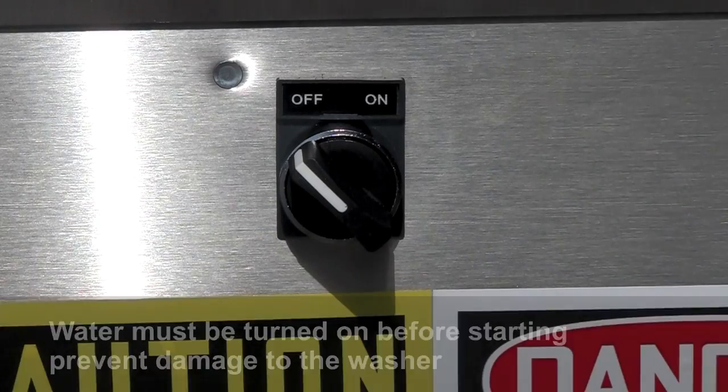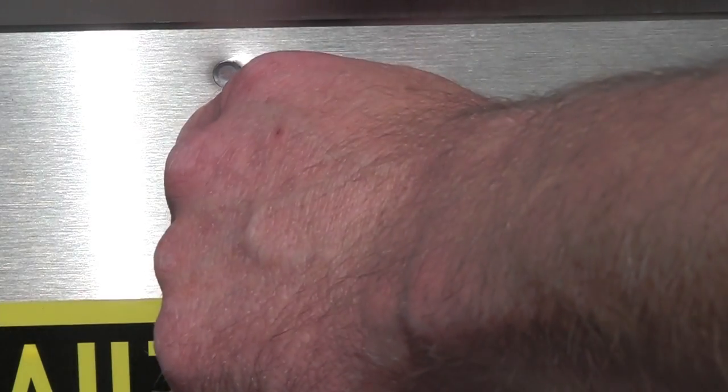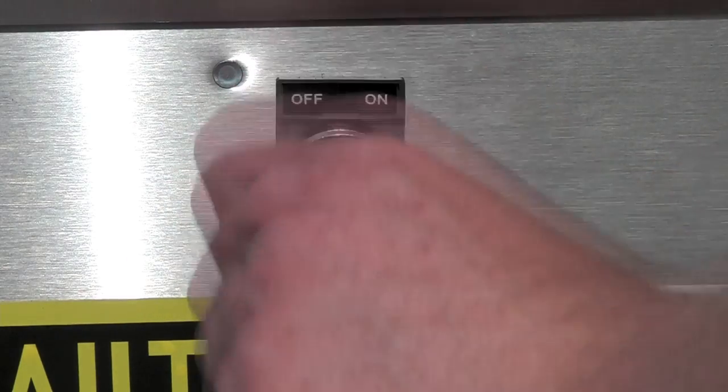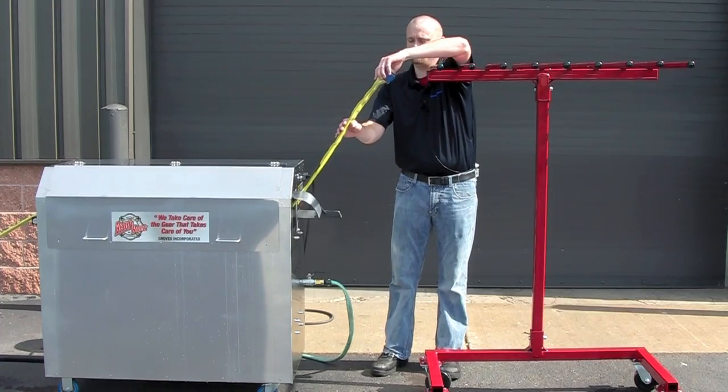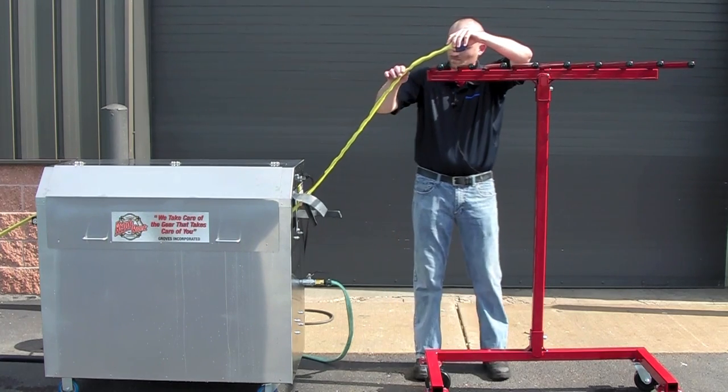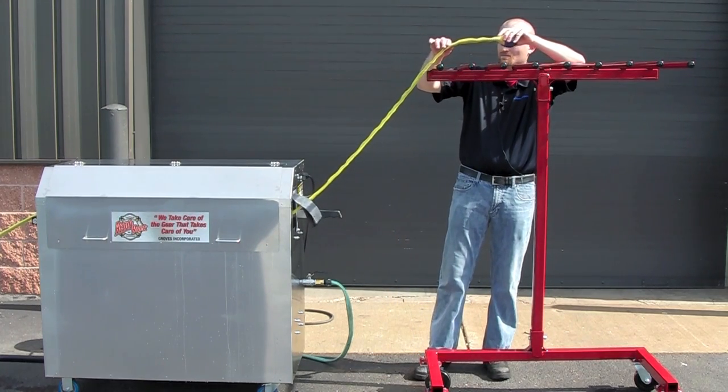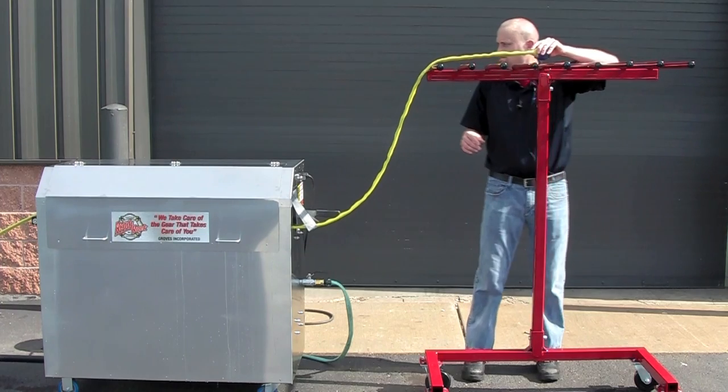With the water on, you may now start the washer. Hose will automatically be fed out of the washer. As the hose begins to come out of the washer, begin to place it on the appropriate drying rack. For this demo, we are using the ReadyRack MHD42 drying rack.